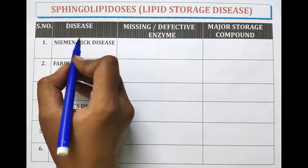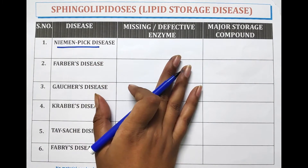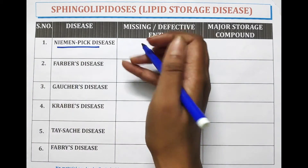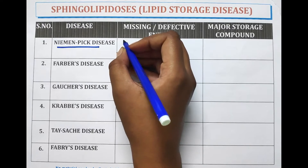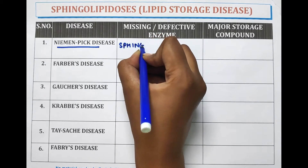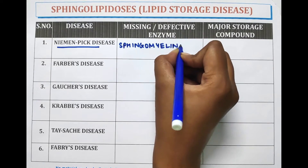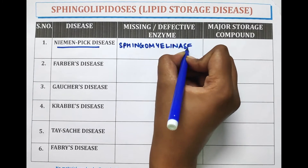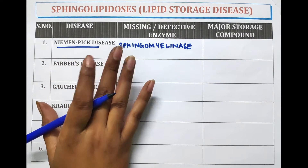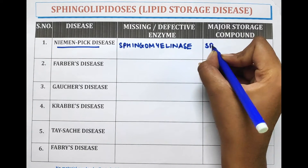The first disease is Niemann-Pick disease. The missing enzyme which causes this disease is Sphingomyelinase. When this enzyme is missing or is defective, then Niemann-Pick disease occurs. The major storage compound is Sphingomyelin.